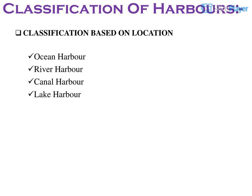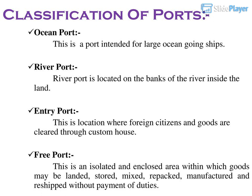Classification based on location: Ocean harbour, river harbour, canal harbour, and lake harbour. Classification of ports: Ocean port — intended for large ocean-going ships. River port — located on the banks of a river inside the land. Entry port — a location where foreign citizens and goods are cleared through a custom house.